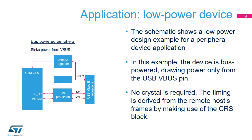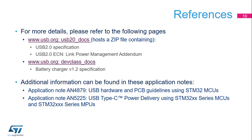Here is an application example of a low-power peripheral device. Power is drawn directly from the USB VBUS signal. No crystal is required. For complete USB specification documents, please refer to USB.org. The USB 2.0 document home page has a zip file containing the USB 2.0 and OTG 2.0 specifications and an engineering change notice, or ECN, for link power management, or LPM. The USB device class documents page has the battery charger specifications.